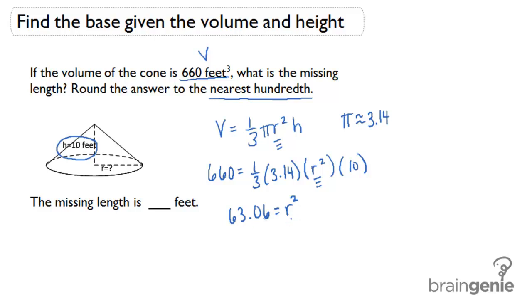And because this clearly is not a perfect square, I'm going to need my calculator to find the square root of 63.06. And that equals approximately 7.94.